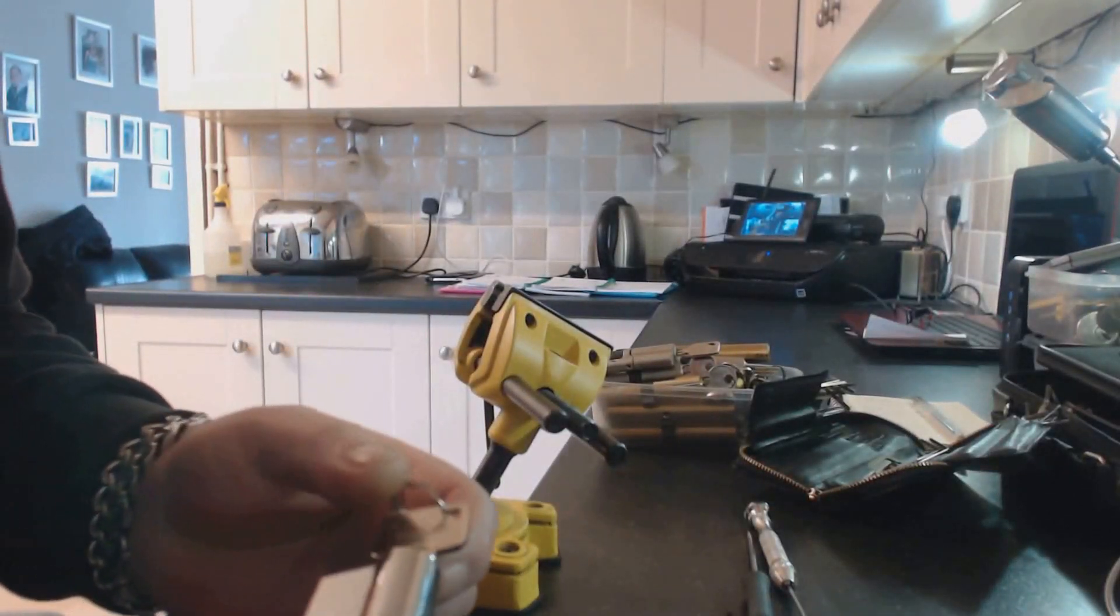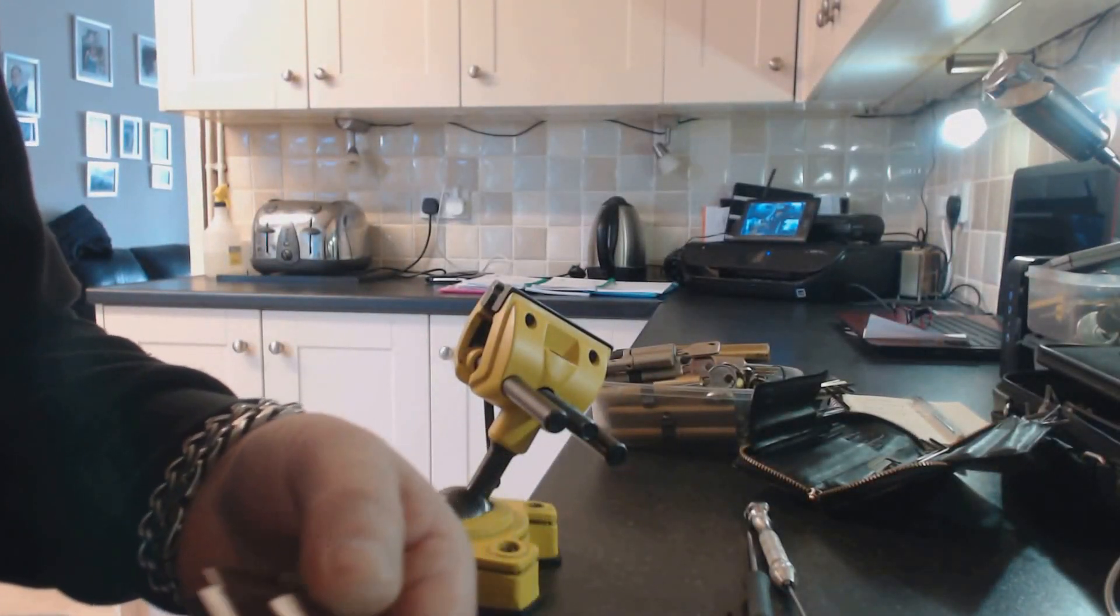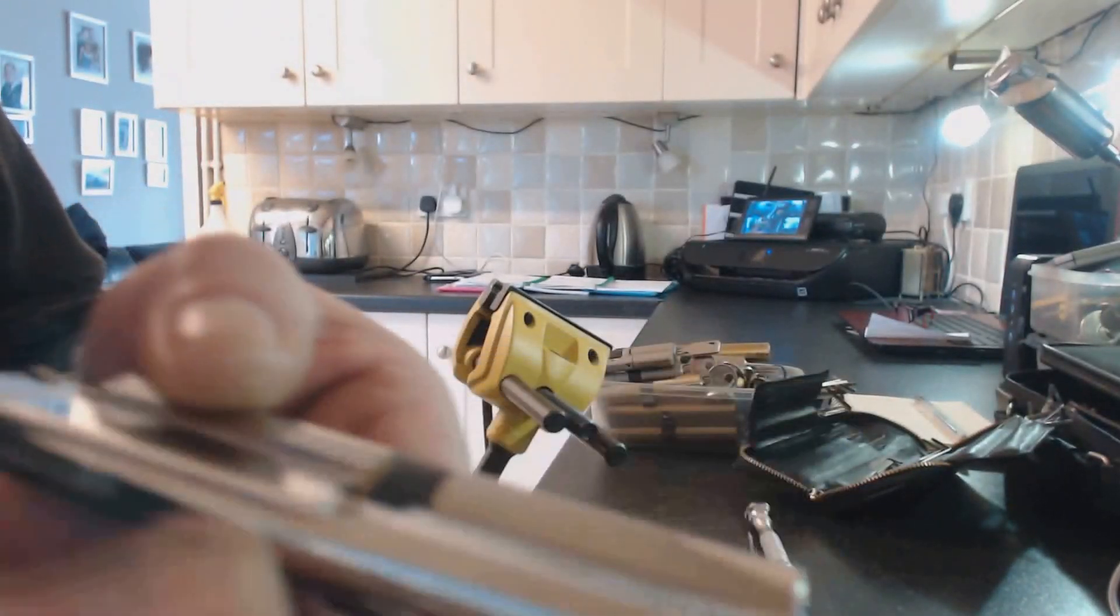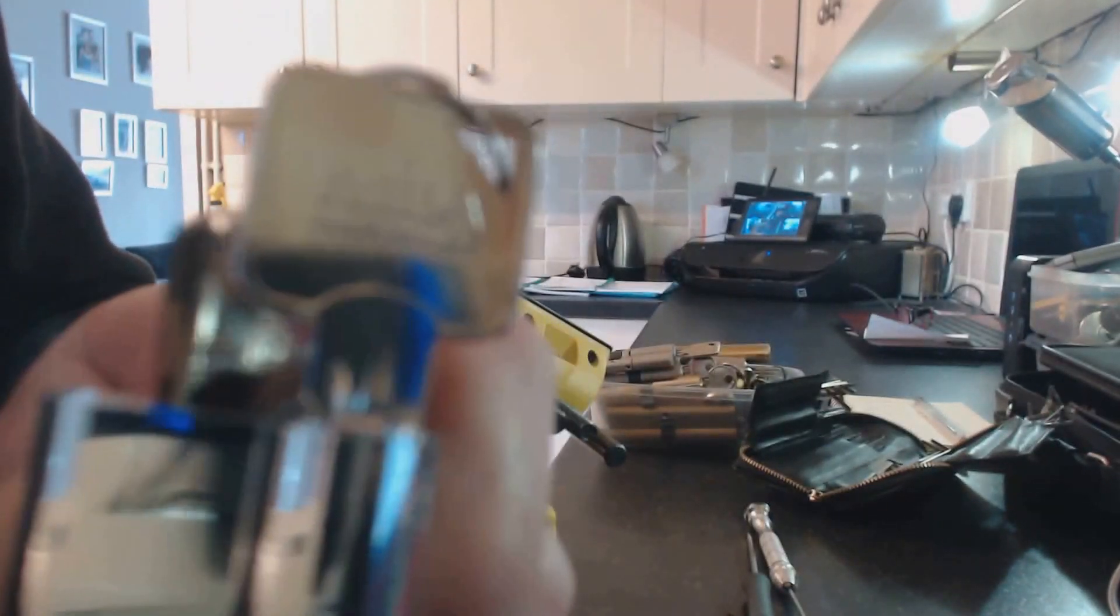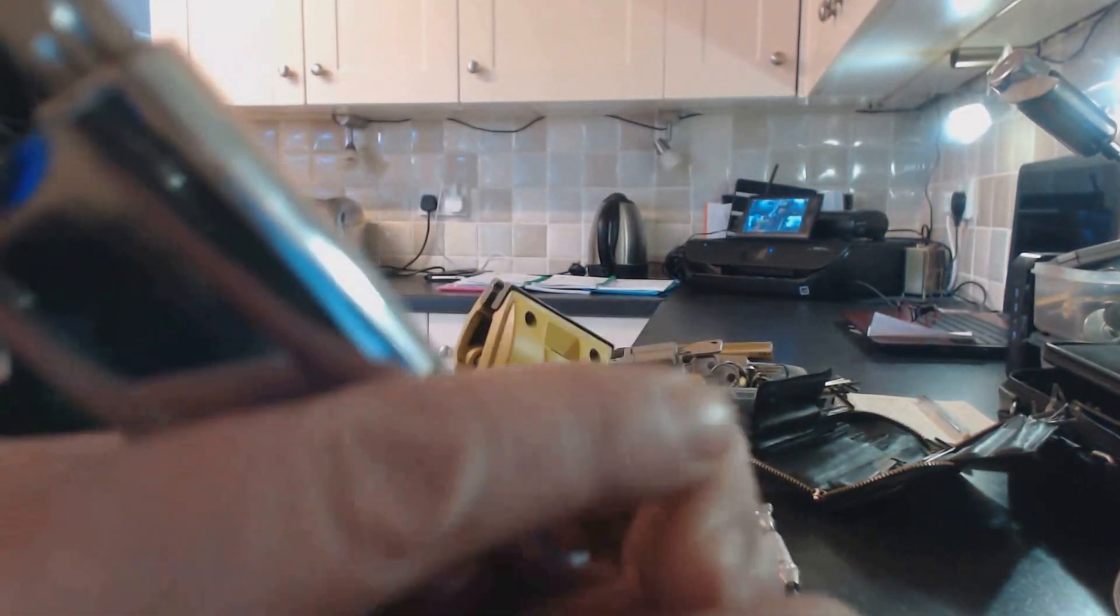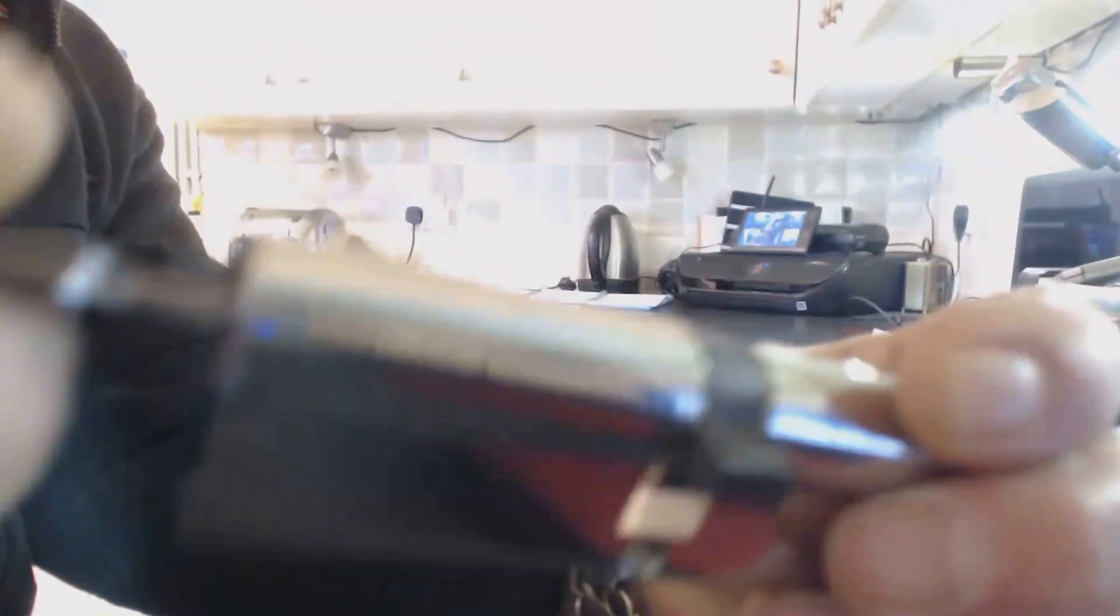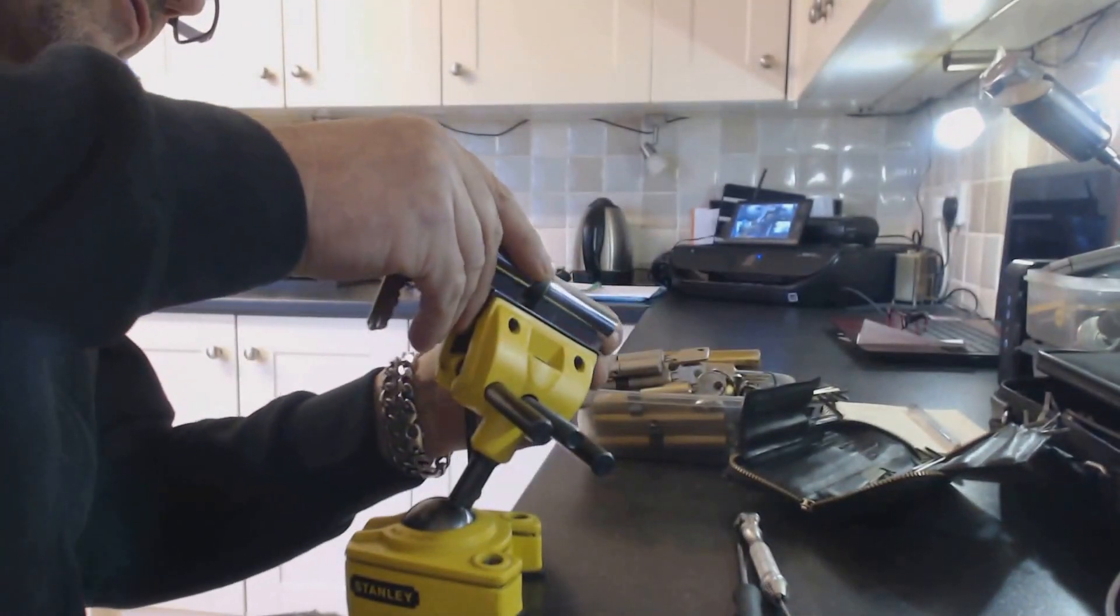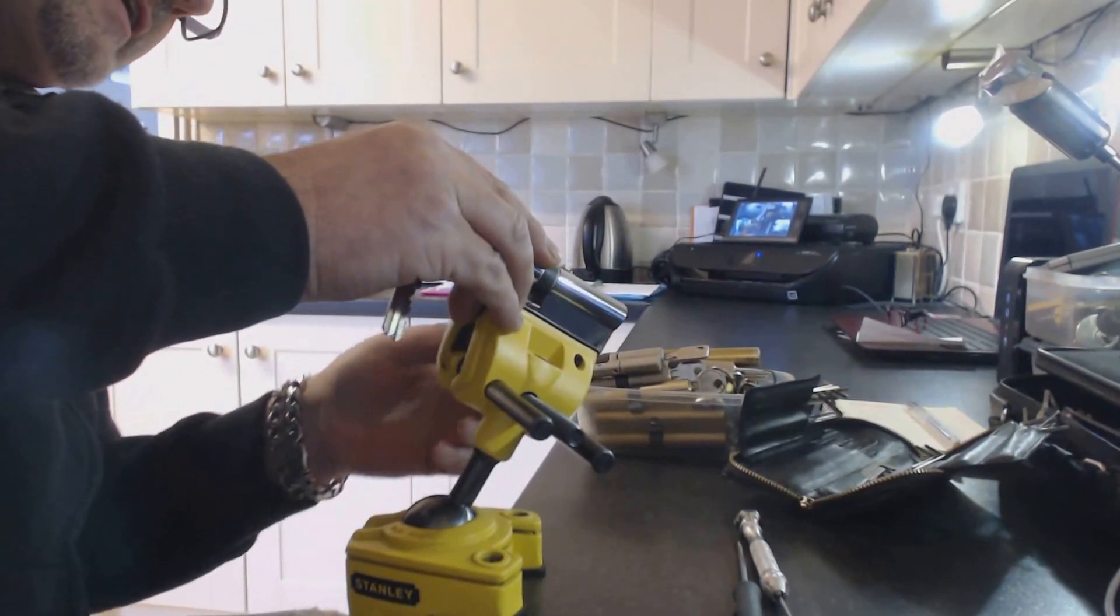Hi welcome to Rowthorns Locksmiths and Locksmith training. This morning we're gonna have a look at this cylinder. It's a six pin from Mila, that's working keys. What we're gonna see or try is can we rake it open.